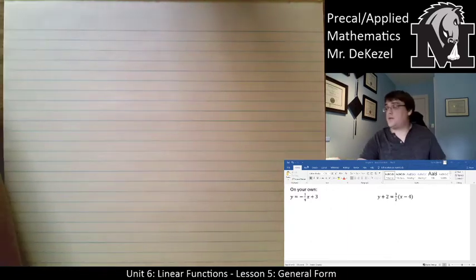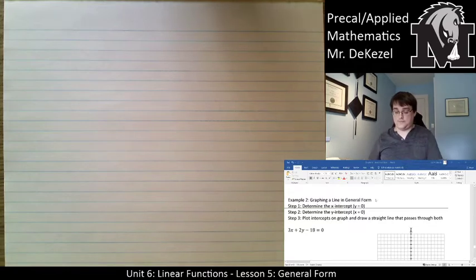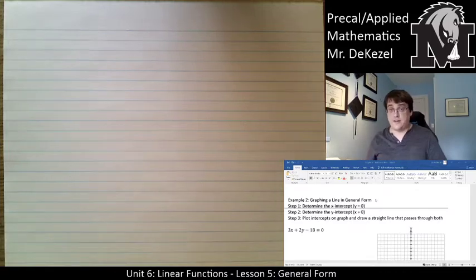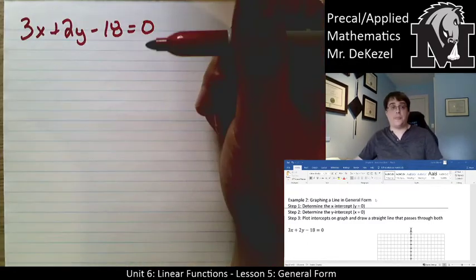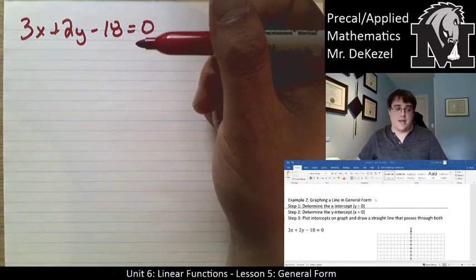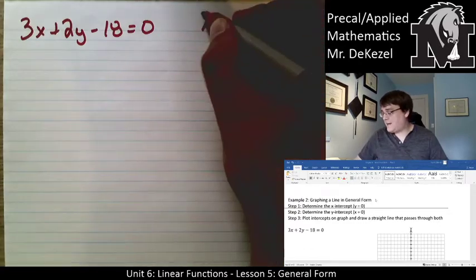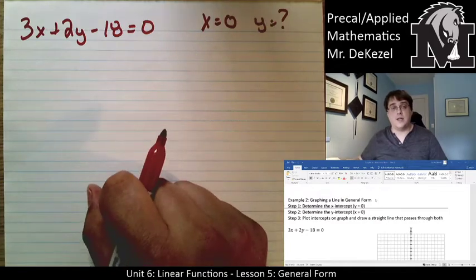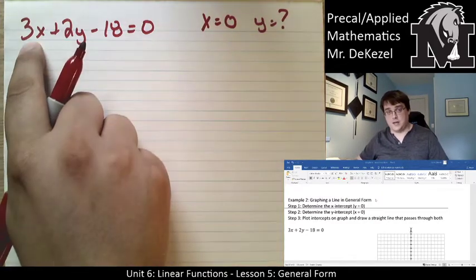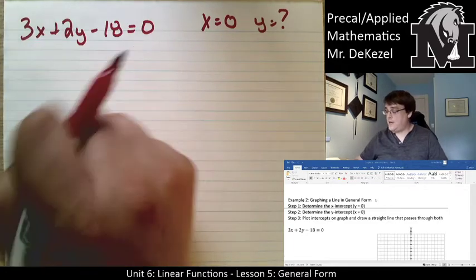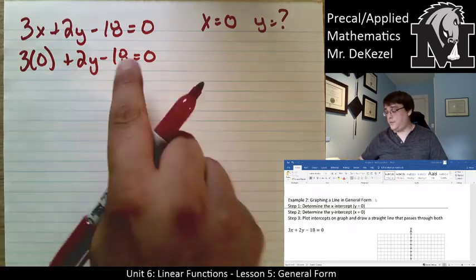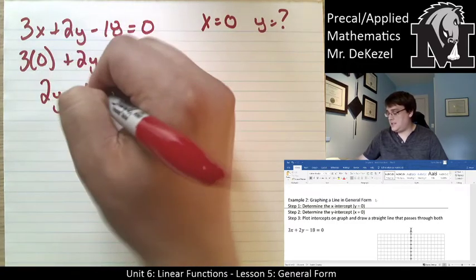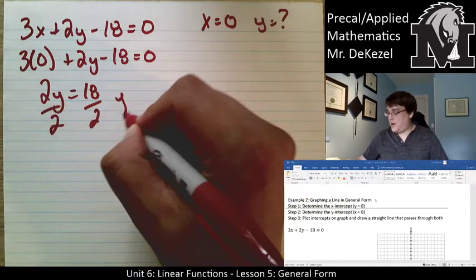Now we move to plotting a graph from a general form equation by finding the two intercepts. We have 3x + 2y - 18 = 0. The y-intercept occurs when x = 0: plugging in gives 2y - 18 = 0, so 2y = 18, and y = 9.